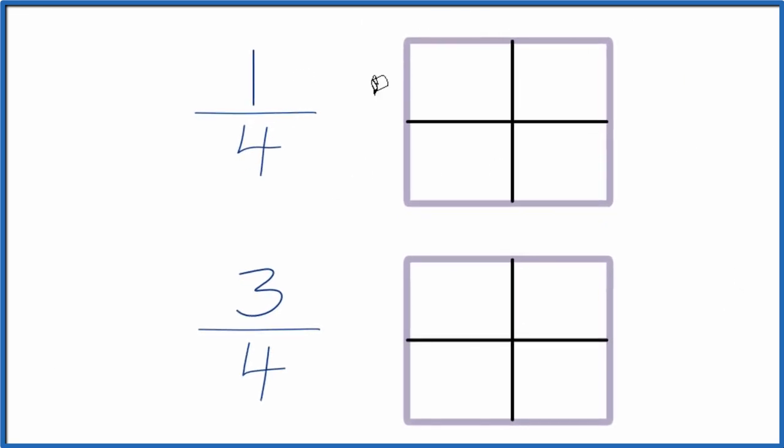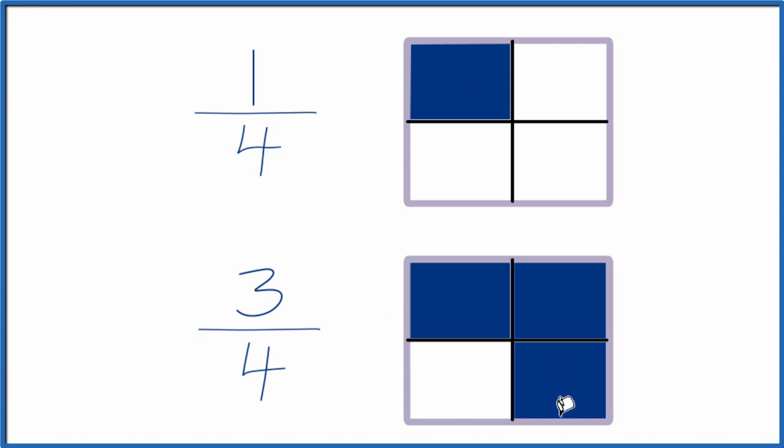So if we filled in one of the squares here, that would be one-fourth, one of four. Down here, if we filled in three, one, two, three, that's three-fourths.